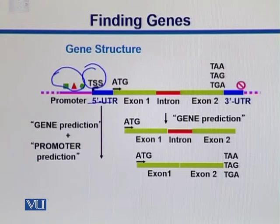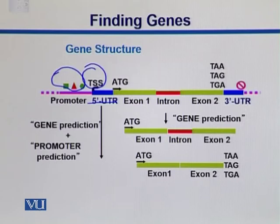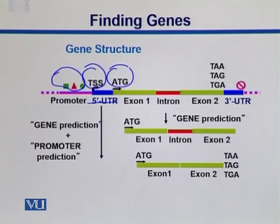Then there is a region called the 5' UTR — untranslated region. That part goes into the RNA but is not translated, so protein is not formed from this region. Since transcription starts from here, that's why it is the TSS. Translation starts from the start codon, which is ATG. These amino acids are incorporated into proteins while reading nucleotides in the form of triplets — we call them triplet codons. ATG encodes for methionine, and that is true for most polypeptides, with a few exceptions.